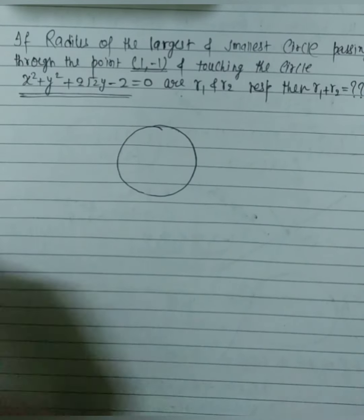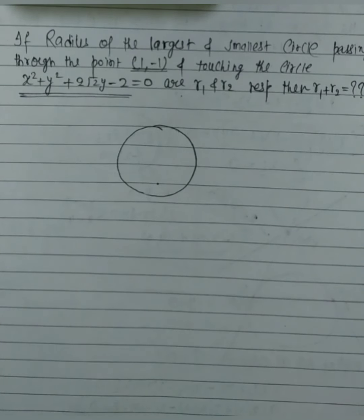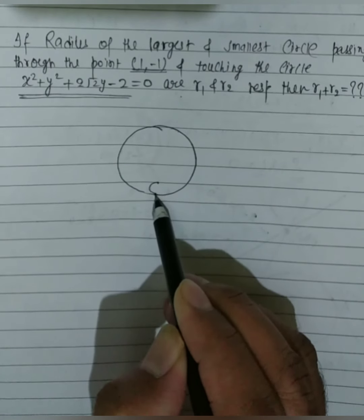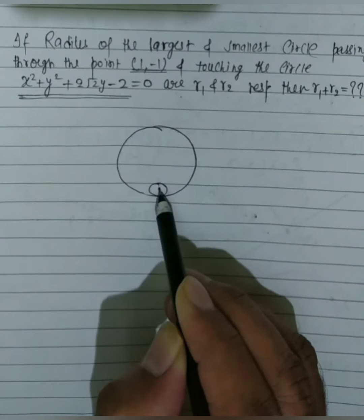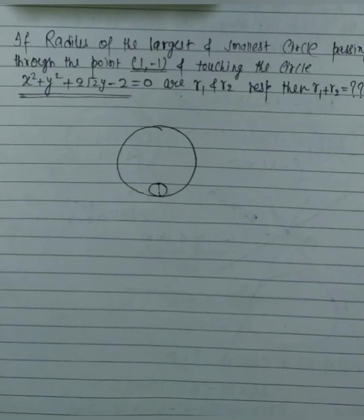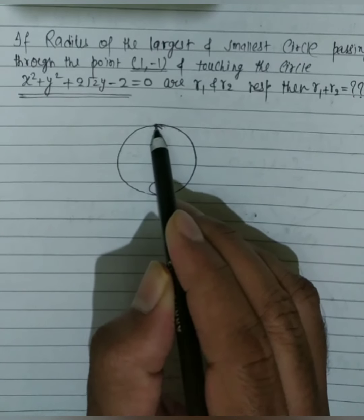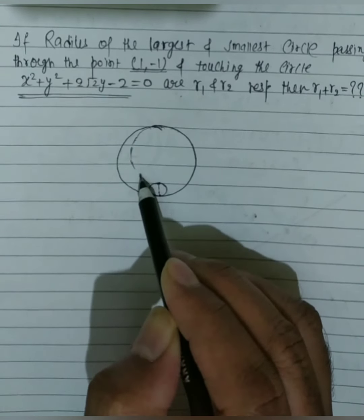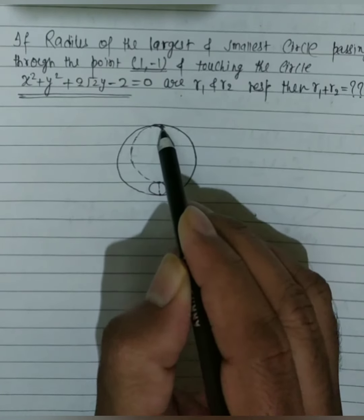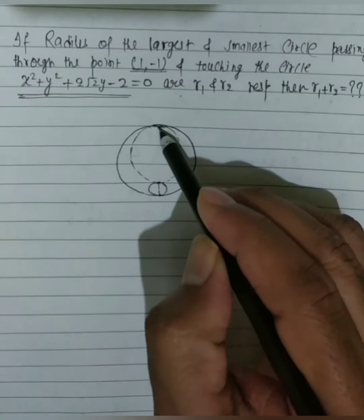Since substituting (1, −1) gives a negative quantity, the point is inside the circle. Infinitely many circles can pass through this point and touch the given circle. The smallest such circle will have its touching point and the given point (1, −1) along the diameter direction, and the largest circle will also be along that diameter.